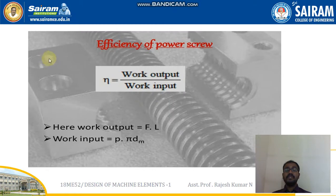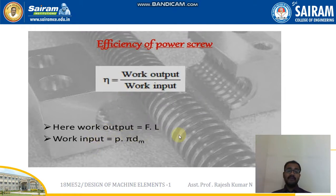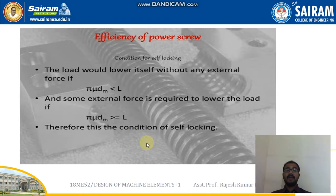The efficiency of the power screw is work output divided by work input. Work output equals F times l, and work input equals P times π·dm. We will now discuss the condition for self-locking.